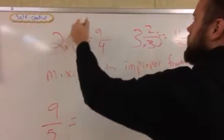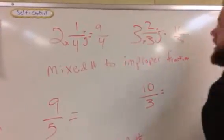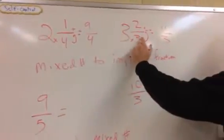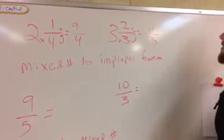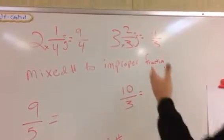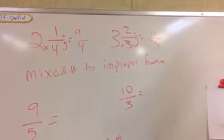We might even call that the C move or a backwards C move. 2 times 4 plus 1, 3 times 3 plus 2. So 2 and 1 4th is equivalent to 9 4ths and 3 and 2 3rds is equivalent to 11 3rds.